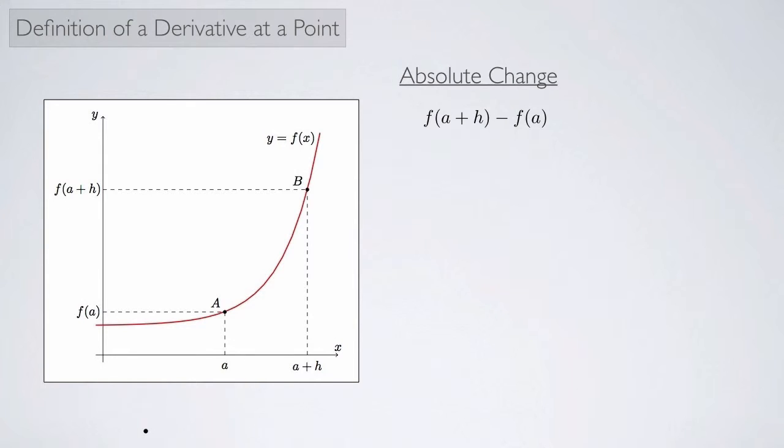And oftentimes it's not the absolute change that we're interested in, but the average rate of change. And that looks like f of a plus h minus f of a, that's the absolute change, divided by the interval h. And the blue line here represents a secant line between points a and b, and the average rate of change we saw was equivalent to the slope of this secant line.